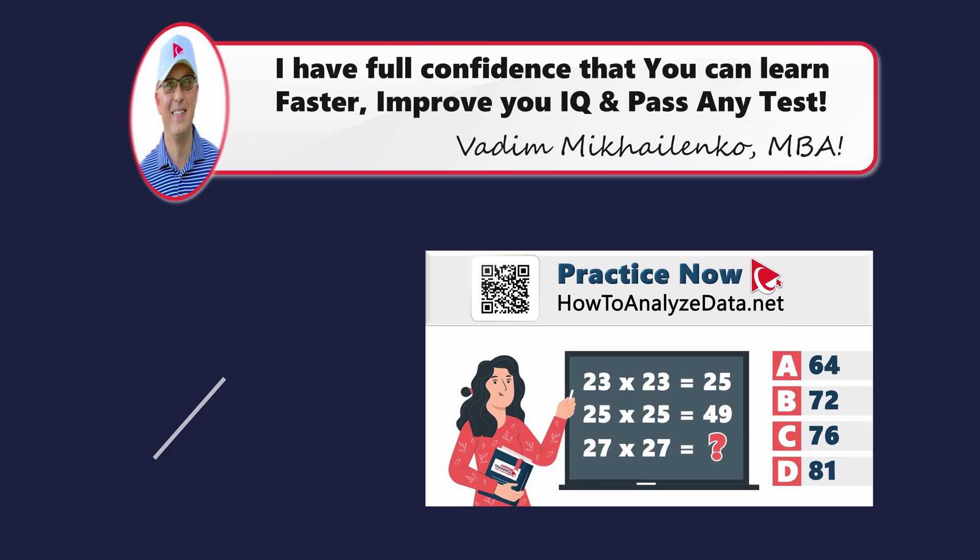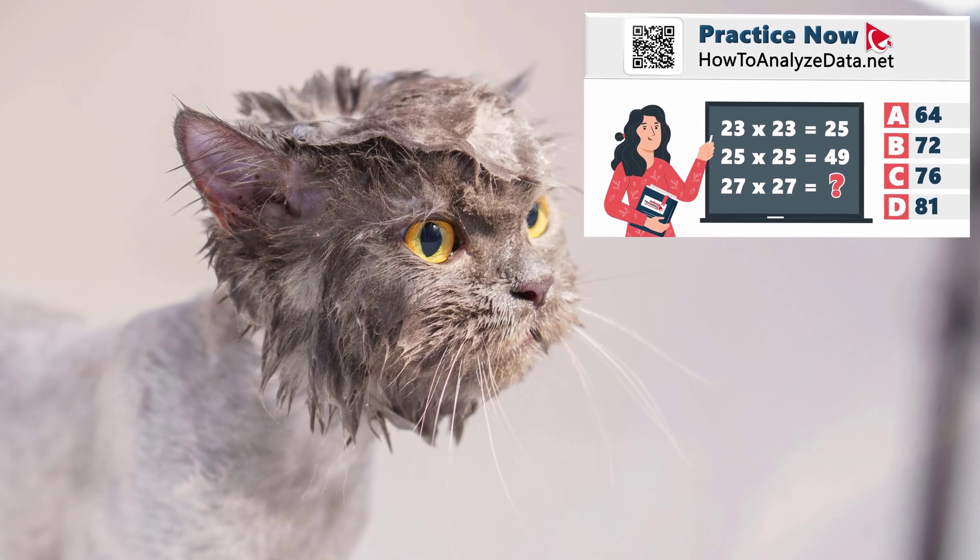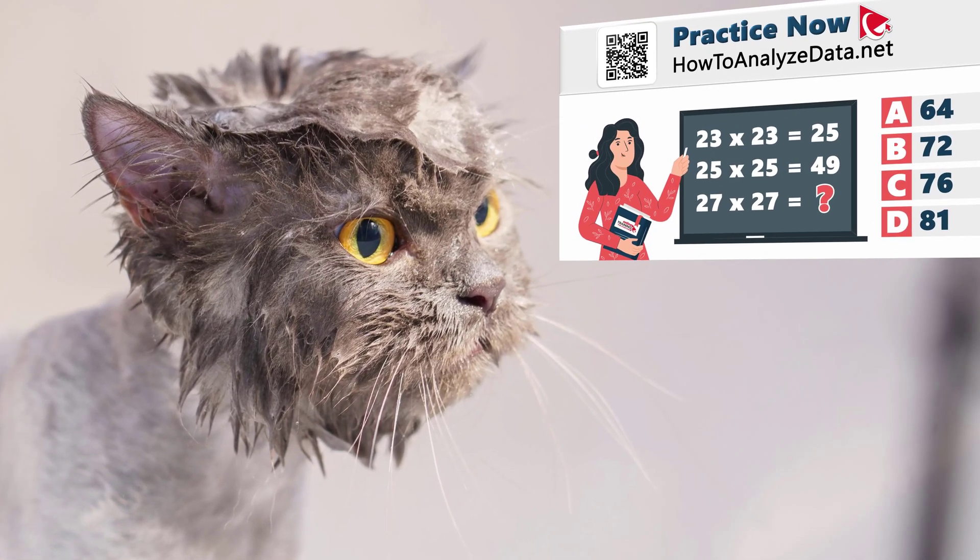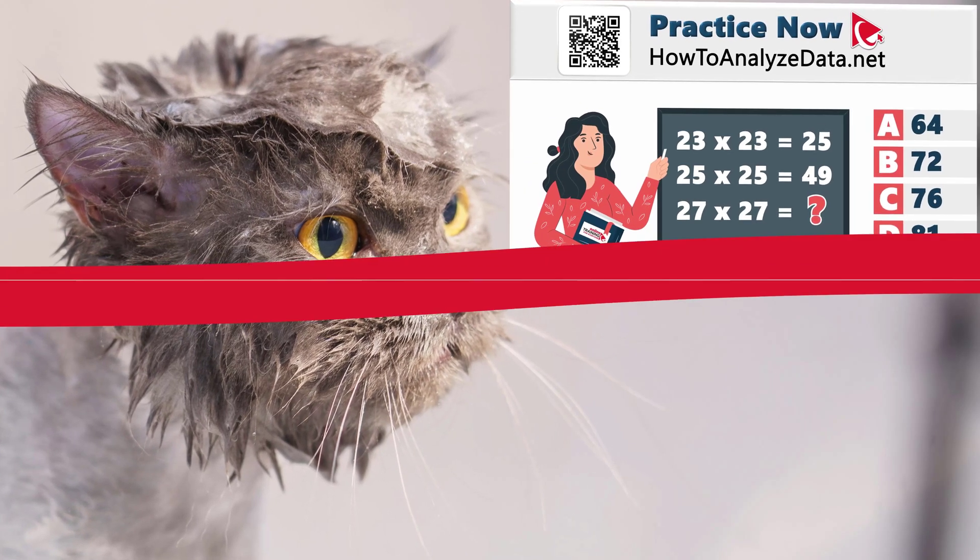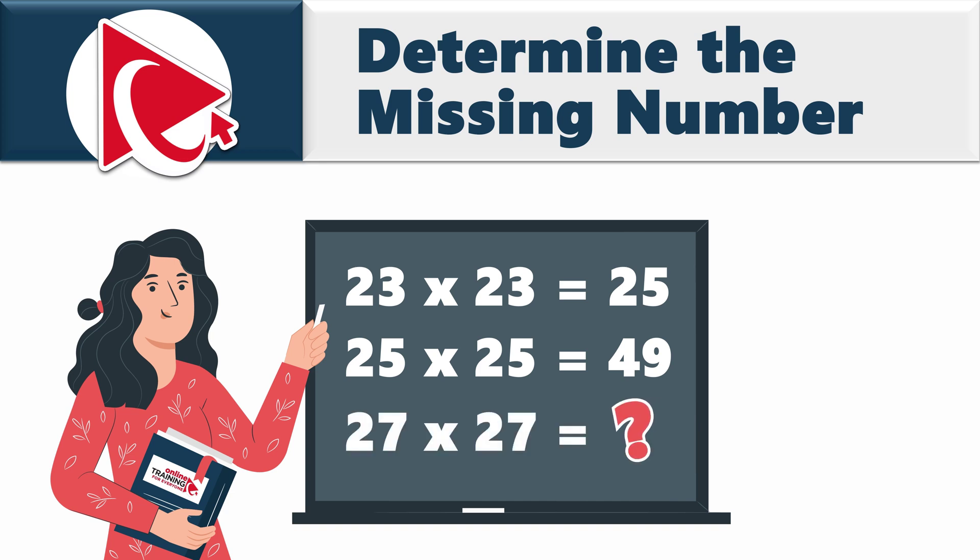Let's face it, navigating this question is like convincing a cat to take a bath. A tricky endeavor, but once you soak in the solution, it's a clean success. This assessment might be measuring our ability to handle slippery math expressions. You're presented with three of those expressions. The first one is 23 multiplied by 23 equals 25. The second one is 25 multiplied by 25 equals 49. And the third one is where you need to find the missing number. The expression is 27 by 27, and you need to select the result out of four possible choices: Choice A, 64. Choice B, 72. Choice C, 76. And choice D, 81.